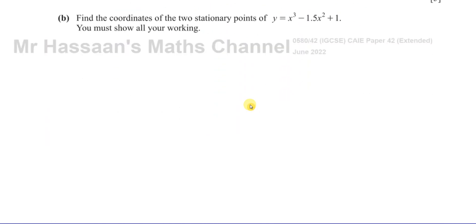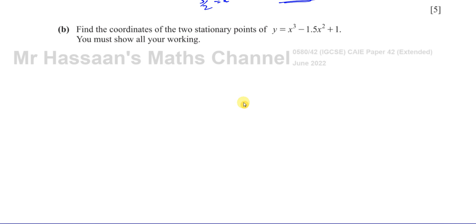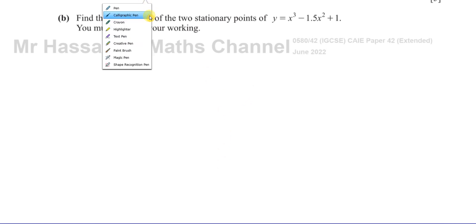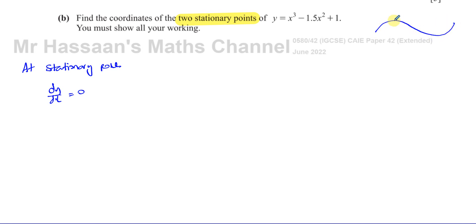And now for part B, it says find the coordinates of the two stationary points of this graph. So the stationary points of a curve are basically the places where dy dx is 0, the places where the curve turns. And we can see this is a cubic curve. What we're finding is those points where the gradient is 0.